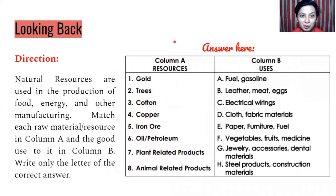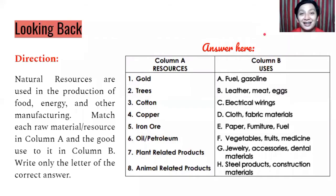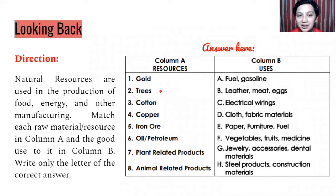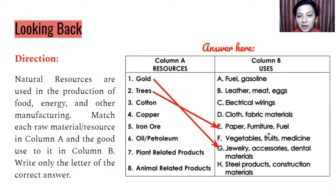So for our review activity, these natural resources are used in production — production of food, energy, and other manufacturing. Match each raw material or resource in column A with the good use of it in column B. Write only the letters of the correct answer. For example, gold — gold can be used as jewelry, accessories, and dental materials — that's letter G for number one. And for number two, we have trees — trees can be made into paper, furniture, or fuel — that's letter E. So number one is G, number two is E, and then do the rest.